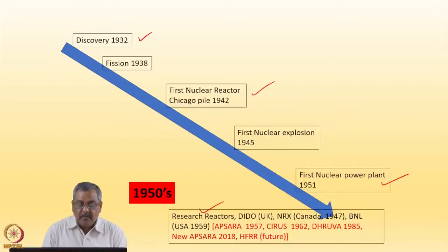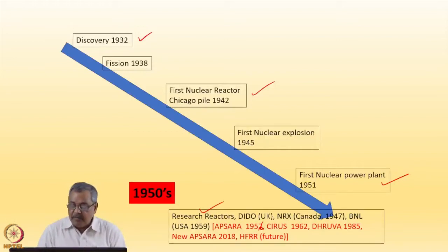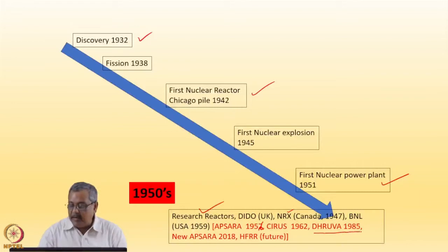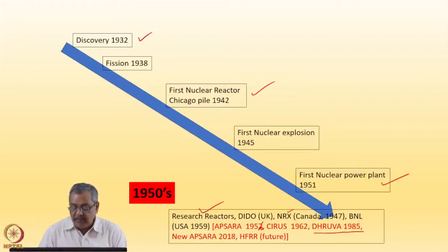People realized quite early that neutrons can be an excellent probe of matter. Research reactors like DIDO in the UK, NRX in Canada, and Brookhaven National Laboratory started coming up around 1956. India had the Apsara reactor in 1956 — a highly enriched uranium core reactor — and another in 1962, similar to the NRX reactor in Canada. Presently, we have the indigenously built Dhruva reactor. A new reactor called New Apsara came up in 2018, and there are plans for a High Flux Research Reactor (HFRR) for future research.